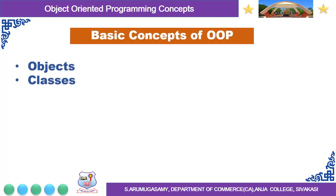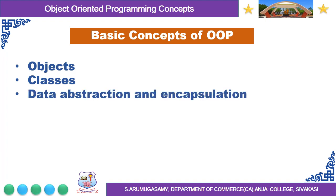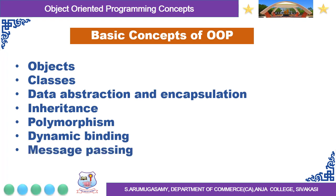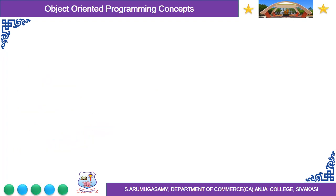Let us learn about the basic concepts of Object Oriented Programming. The first one is Objects and Classes, Data Abstraction and Encapsulation, Inheritance, Polymorphism, Dynamic Binding, and Message Passing.